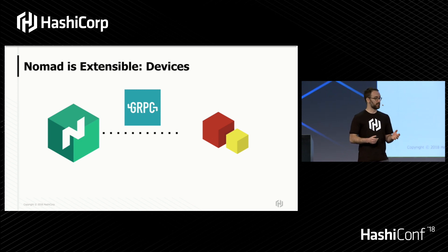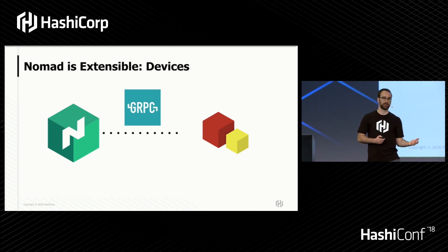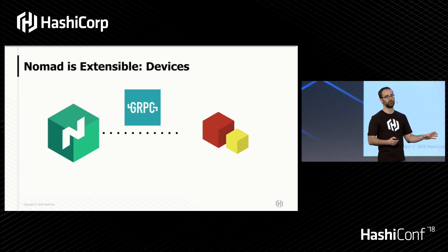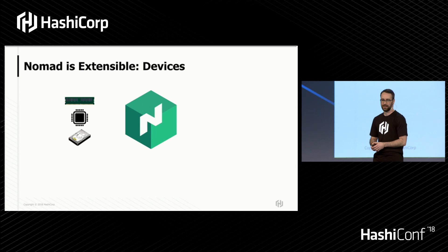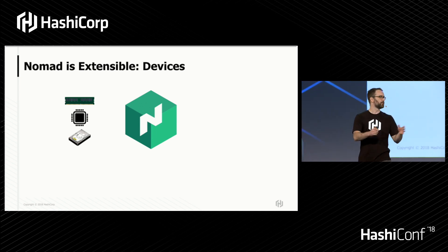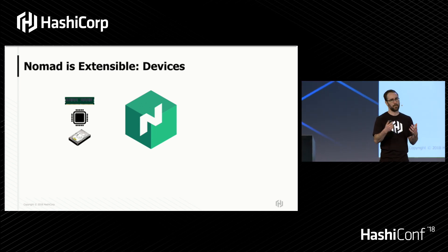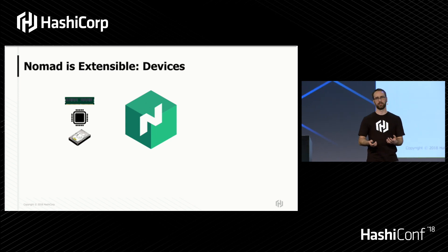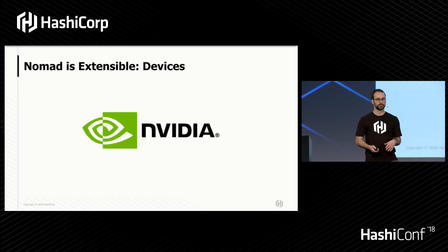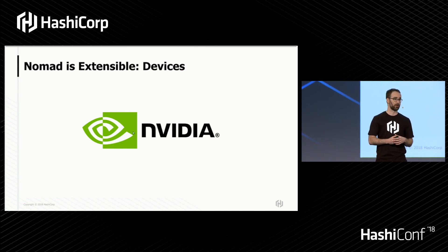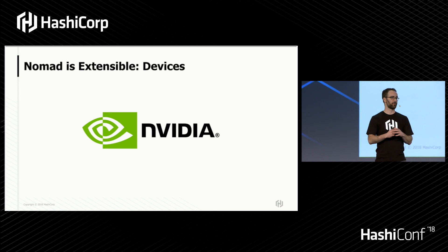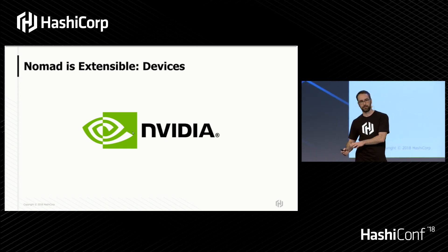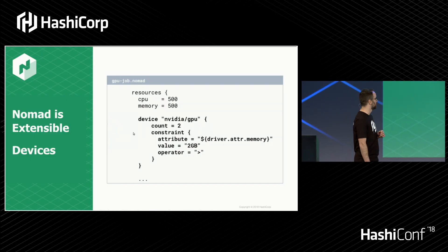The other plug-ins we're going to enable in Nomad 0.9 are device plug-ins — an entirely new feature. We've always supported a basic set of resources: memory, compute, storage, and network. But we're very excited to announce that Nomad 0.9 will have NVIDIA GPU support, enabling a wide number of workloads optimized for GPUs — ML, AI — to run across your GPU-optimized cluster.